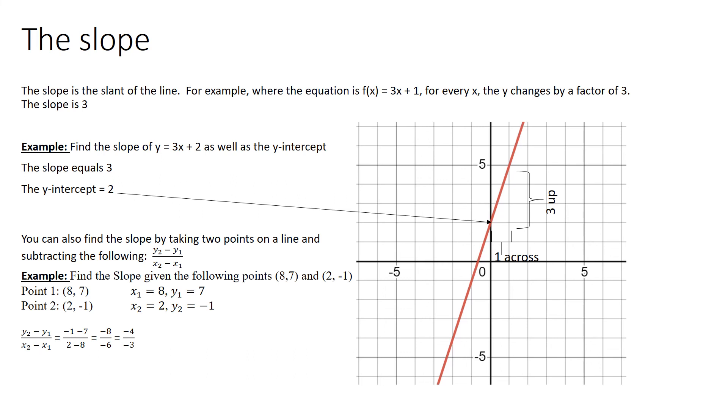My x1 is 8, my y1 is 7, and the second point, my x2 is 2, my y2 is negative 1, and I'm going to plug these numbers into my equation, y2 minus y1 over x2 minus x1. That equals negative 1 minus 7, over 2 minus 8. And that ends up being negative 8 over negative 6, which simplifies to 4 over 3. And that is the slope if I connect those two points with a line.